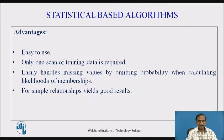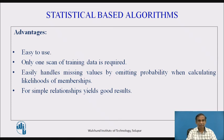The advantage of Naïve Bayes is that it is easier to use. Only one scan of the training data is required from start to end. We can easily handle missing values by omitting probabilities when calculating likelihoods of membership, because the probability of occurrence is very low. For simple relationships, it yields good results.